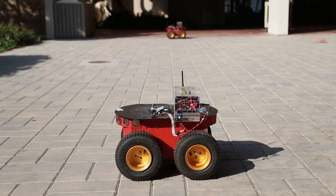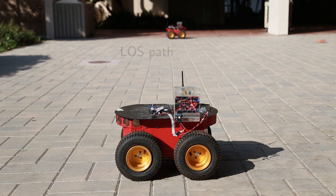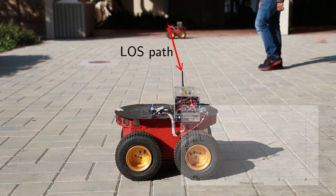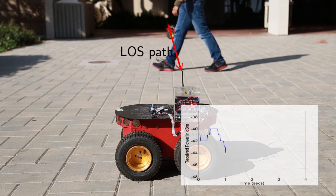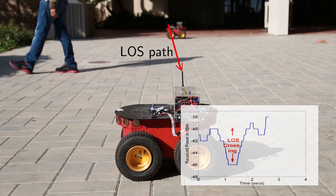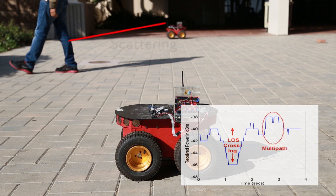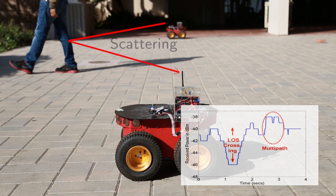Our key observation is that each person mainly affects the link in two ways. First, this person attenuates the link considerably as he crosses the line of sight. Second, he also acts as a scatterer and reflects the signal where he is not at the line of sight, leaving his mark in the form of multipath fading.